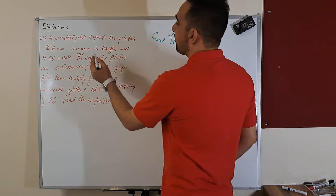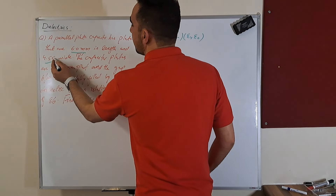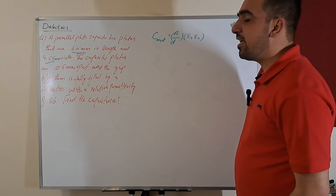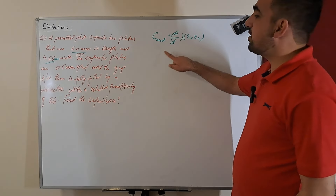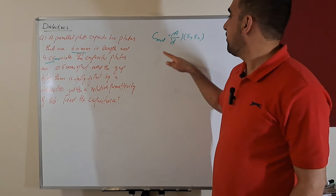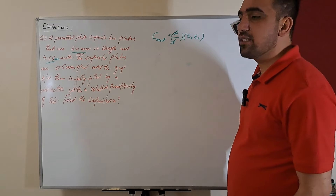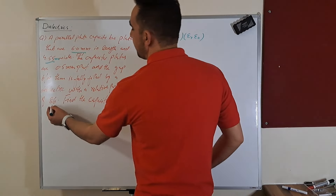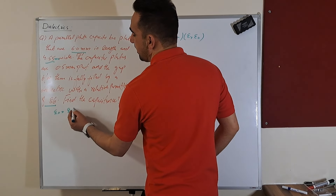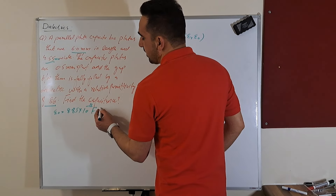Do we have the area? We have the length and width in millimeters. We have the length and width of the plates so we can get the area, and we have the separation of 0.5 mm apart. We have the distance, and we can calculate the capacitance because the relative permittivity is given and the permittivity of free space is 8.85 times 10 to the power minus 12 Farads per meter.